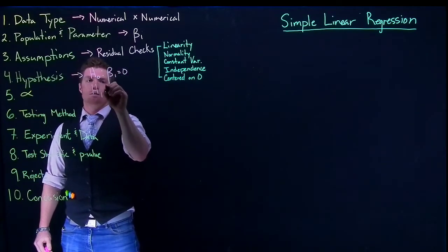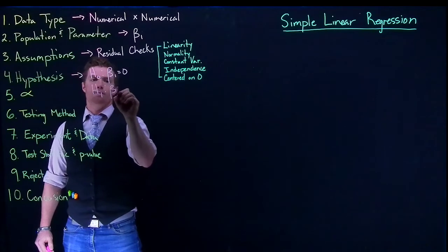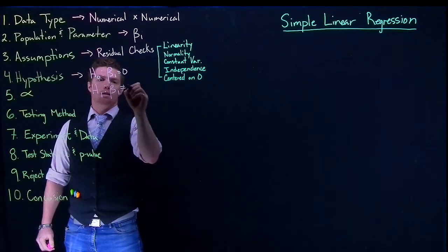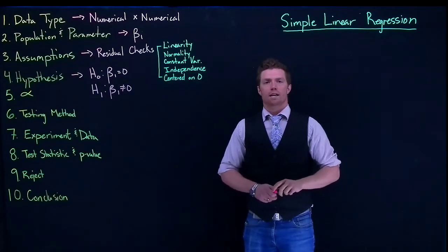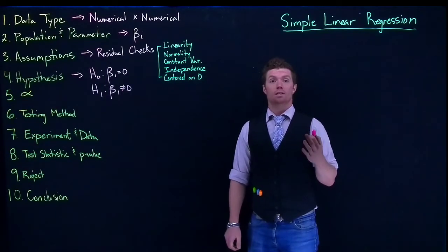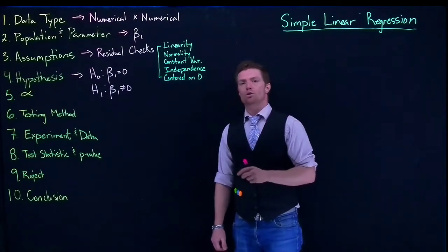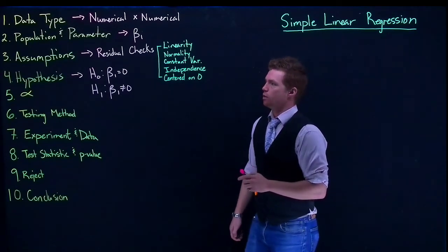And for this one, we'll just say that we'll set up beta 1 as being not equal to zero. A lot of times we wind up doing not equal to zero or this two-tail test in the linear regression. We can do one tail, and we'll go through how to do those in our software videos.